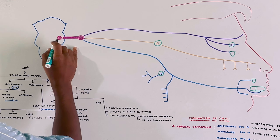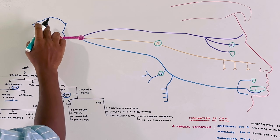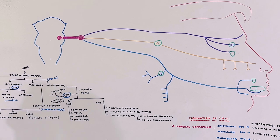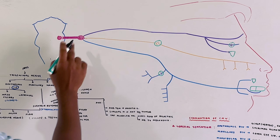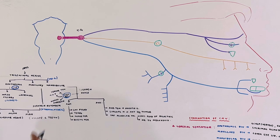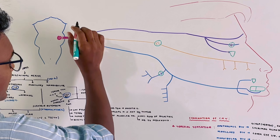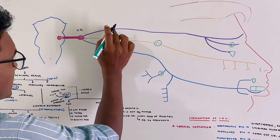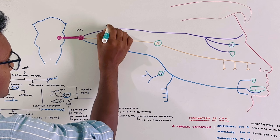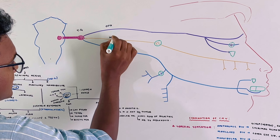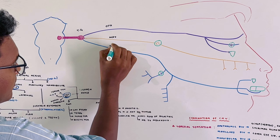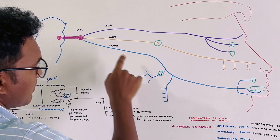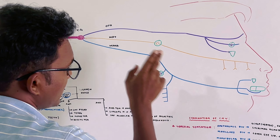The trigeminal nerve arises from the pons. In the picture, you can see the midbrain, pons, and medulla. The nerve arises from the first ganglion, known as the trigeminal ganglion, which has three divisions: the ophthalmic division, the maxillary division, and the mandibular division. The ophthalmic branch is purely sensory, while the mandibular nerve has both sensory and motor properties.